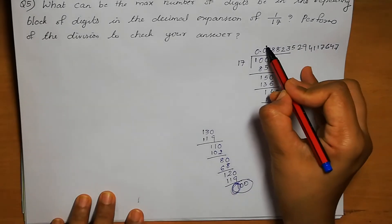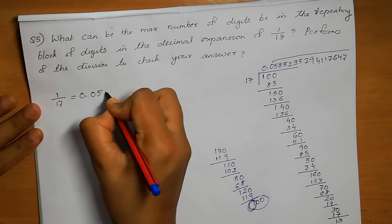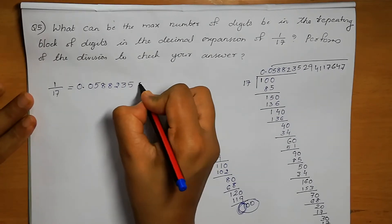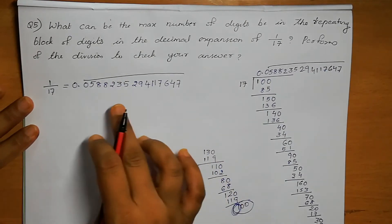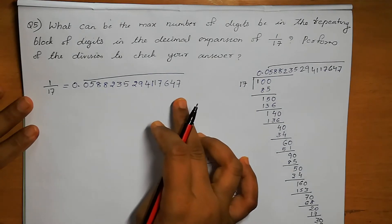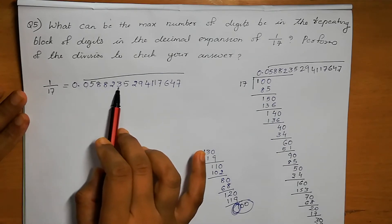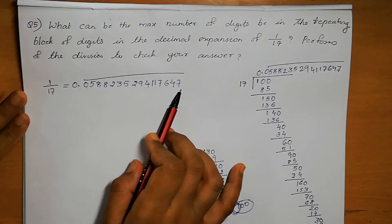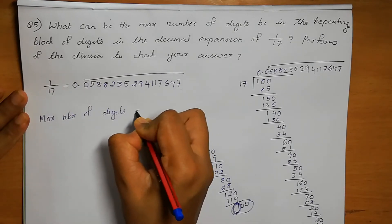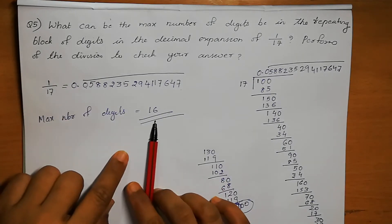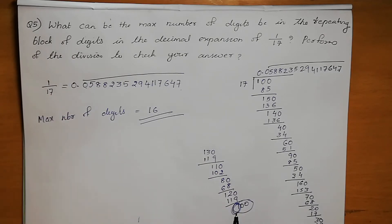That means again it is going to repeat only. So 1 by 17 equals 0.0058823529411764 7, again repeating 0588235294117647. Counting the digits: 1, 2, 3, 4, 5, 6, 7, 8, 9, 10, 11, 12, 13, 14, 15, 16. The maximum number of digits is 16, which is less than the denominator 17. When we get remainder as 1, the answer is confirmed.